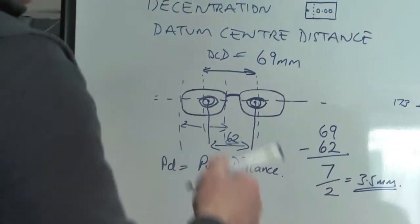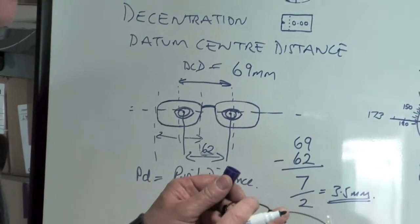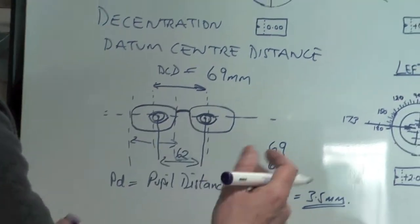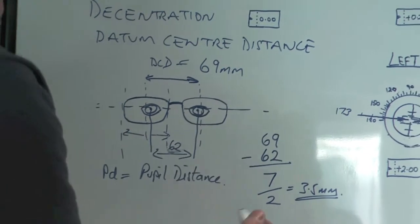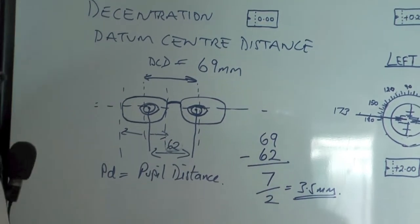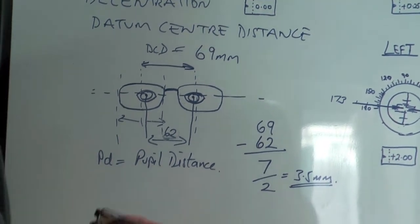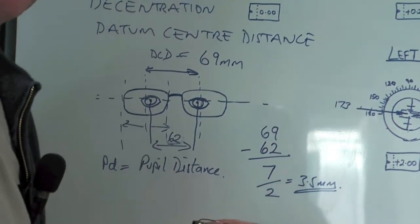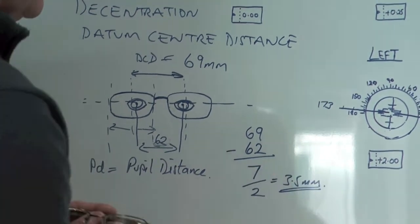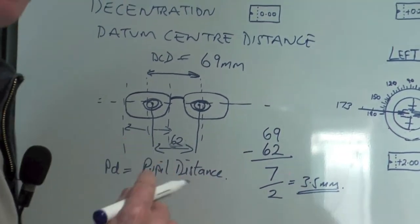So in this particular case with this frame, if I was going to make this frame for me, I would need to de-center each lens. That's why we divided it by two, by three and a half millimeters. So that's really important to understand. We need to de-center the lens three and a half millimeters, both the right lens and the left.